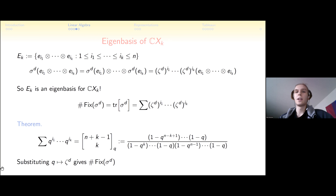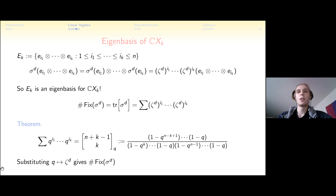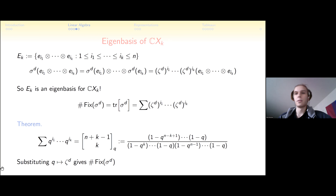We can go one step further: replace every zeta with a variable q, so we can substitute any power of zeta we want. It turns out this polynomial — summed over weakly increasing sequences — is the q-analog of the binomial coefficient. X_k has size (n+k-1 choose k), and we take the factorial expansion and replace every integer i with the polynomial (1 - q^i). The denominator always cancels, and evaluating at powers of zeta gives fixed points of powers of sigma. This is called the cyclic sieving phenomenon.